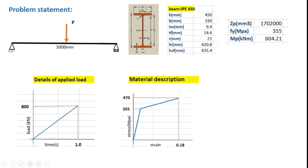The cross section of the beam is shown here. The section is IP450 as per the European standards. The overall depth of the section is 450 mm. The flange width is 190 mm. The thickness of the web and the flanges are indicated here, and the center to center of the flanges is calculated as 435.4 mm, which will be used in the modeling of the shell element.